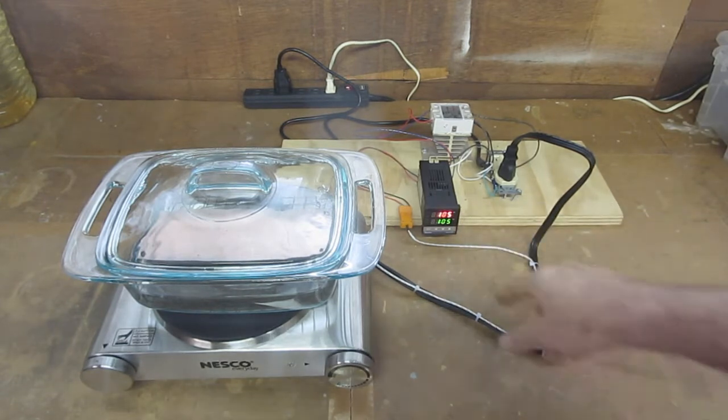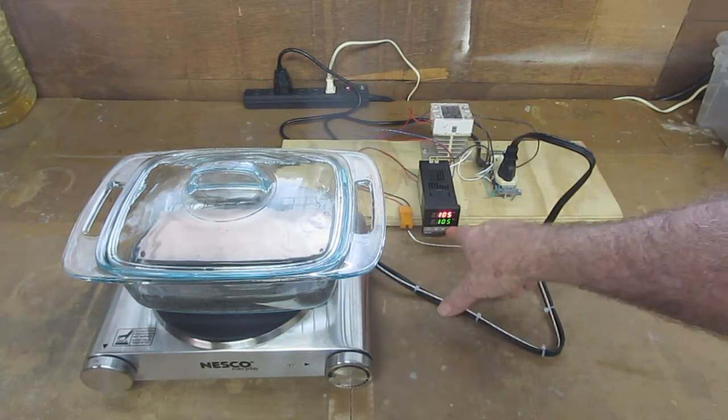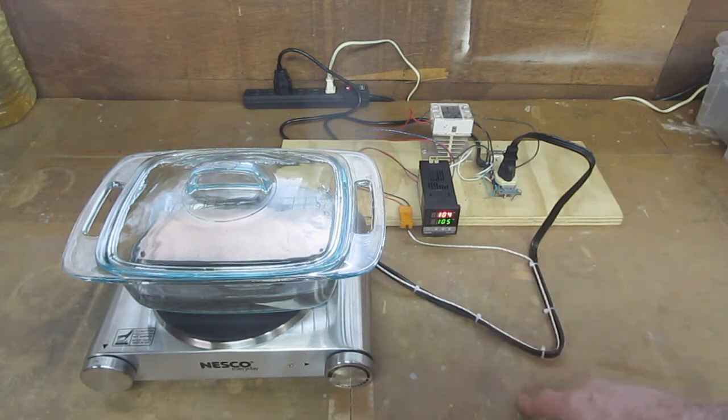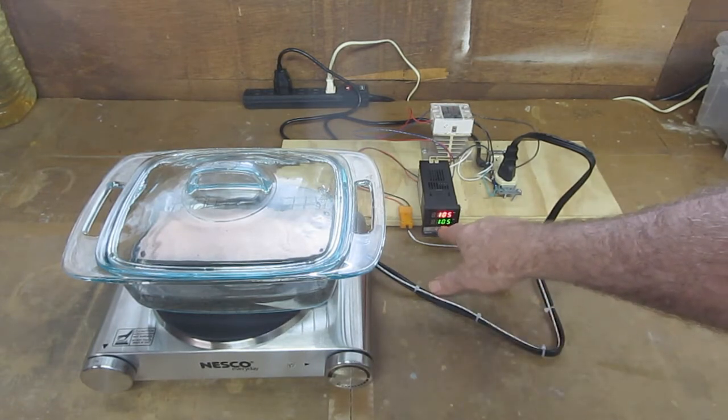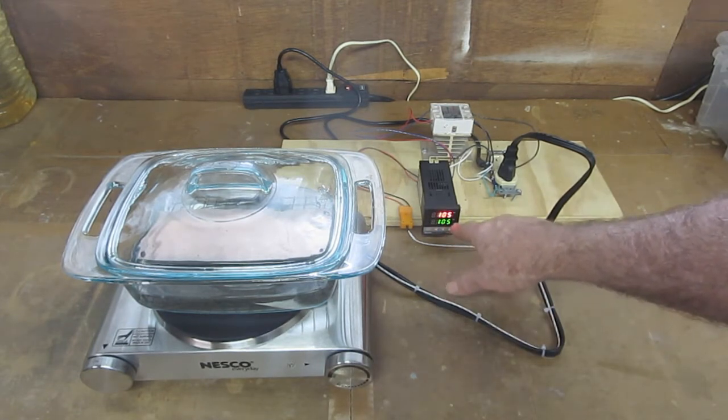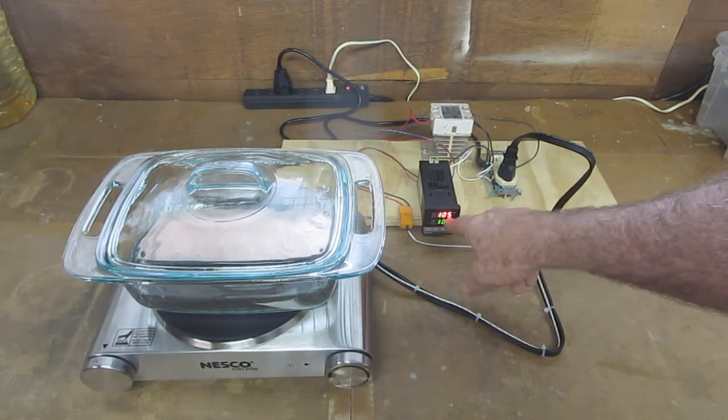I have it set for 105 degrees Celsius, which is barely over the boiling point—that's the green setting on the bottom—and the actual process temperature, that's the red temperature at the top, and it's fluctuating.